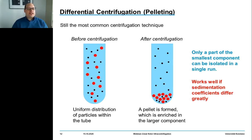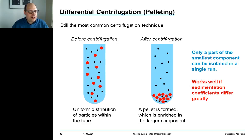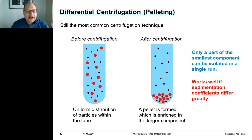Still today, the most common technique of centrifugation is called differential centrifugation. This is exactly where you form a pellet of agglomerated particles at the bottom of your centrifuge tube. Differential centrifugation starts with a homogenous distribution of various particle populations within a centrifuge tube, but even some of the smallest and lightest particles will end up in the pellet because some are initially located close to the bottom.